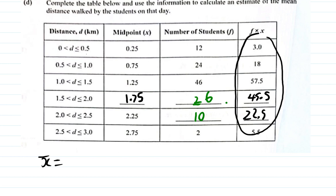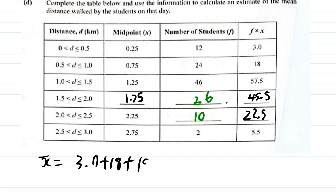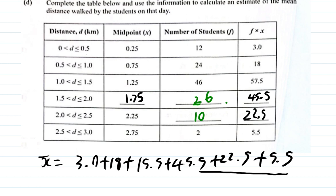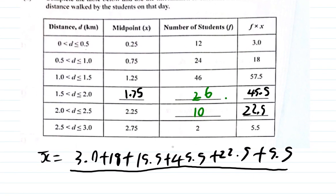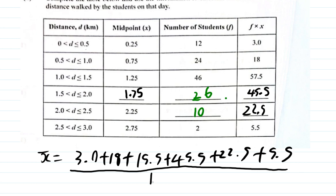So the numbers you must add up are the F times X values: 3 plus 18 plus 57.5 plus 45.5 plus 22.5 plus 5.5. And you do not divide by 6 — you divide by the total number of students, which is 120, because across all rows you have 12 plus 24 plus 46 and so on, totalling 120 values.